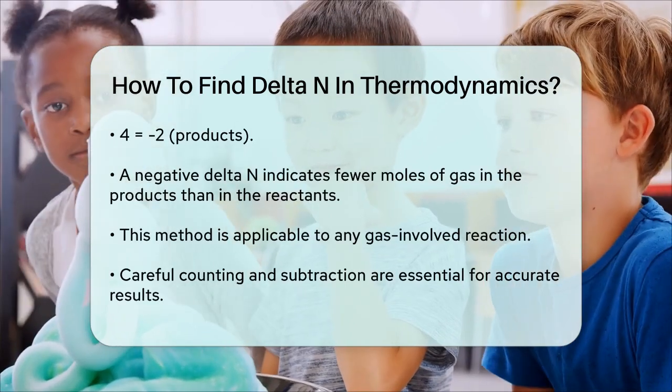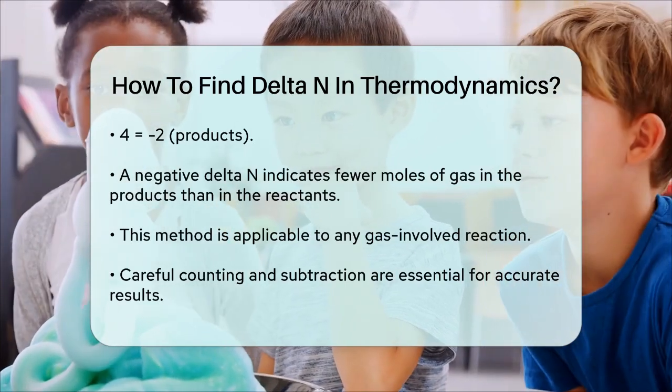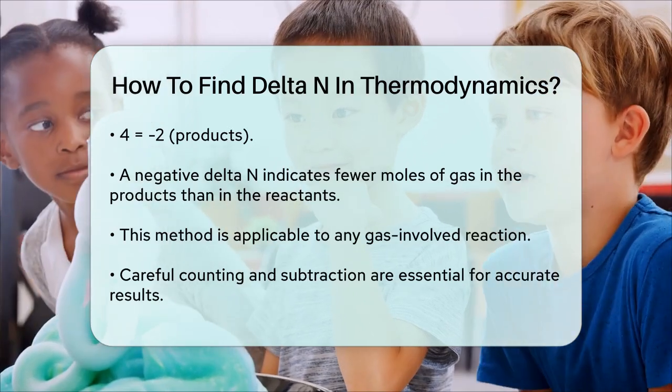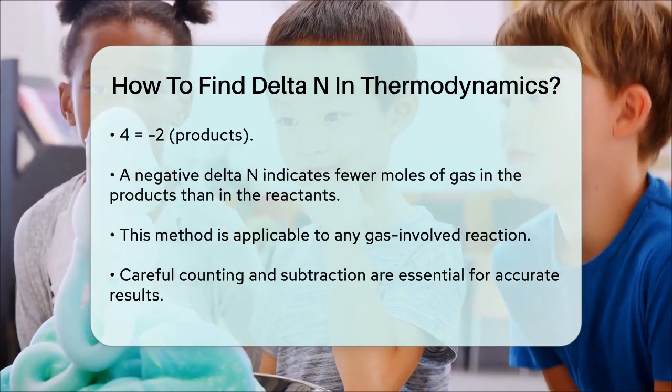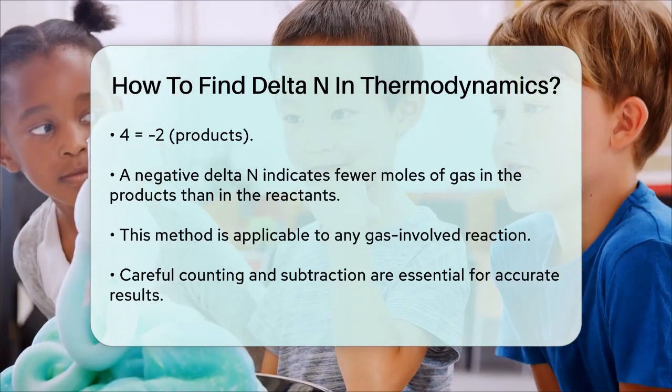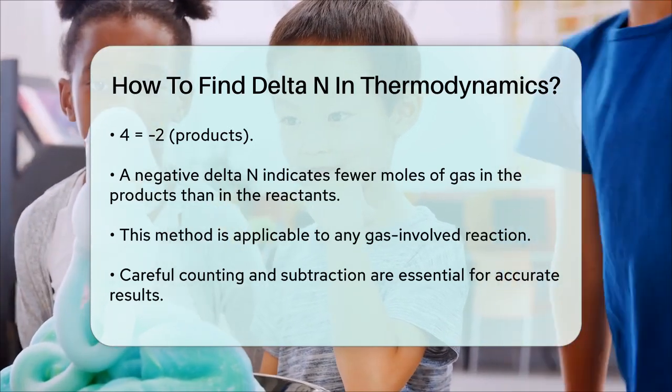In summary, finding delta N is straightforward once you have the balanced chemical equation. It's all about counting the moles of gases and doing a simple subtraction. This calculation is crucial for further thermodynamic analyses, especially when dealing with gas phase reactions.